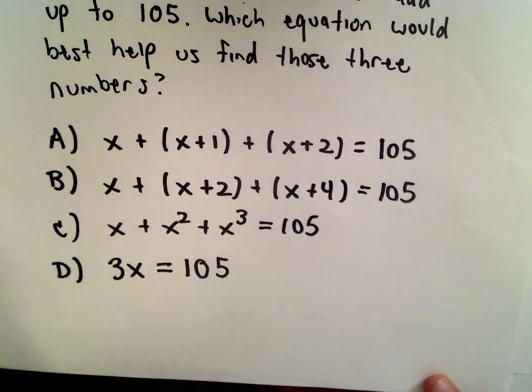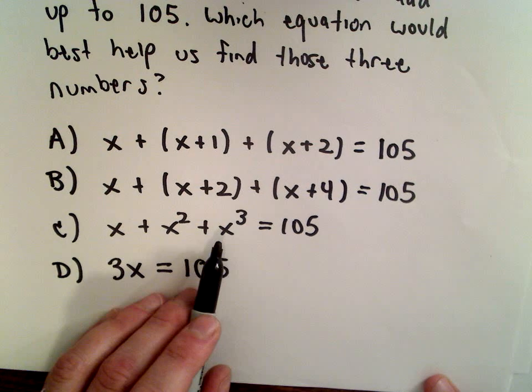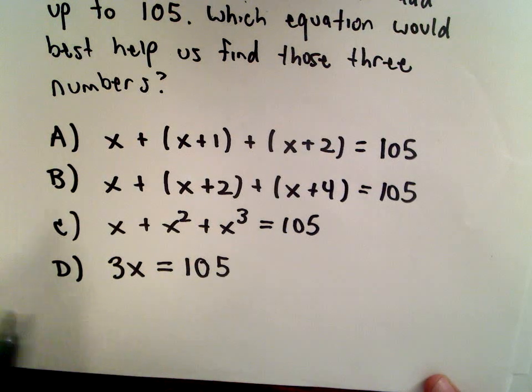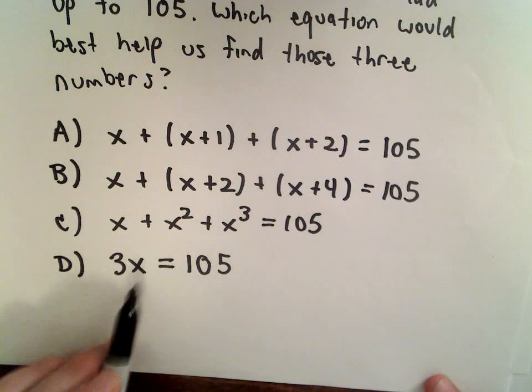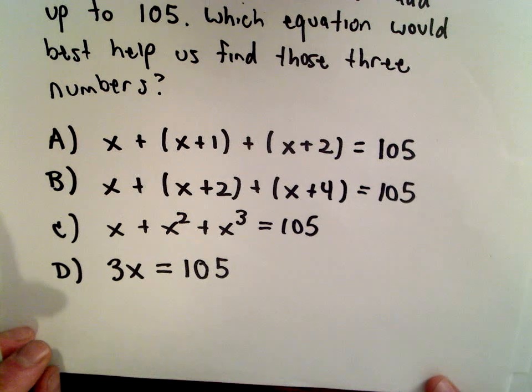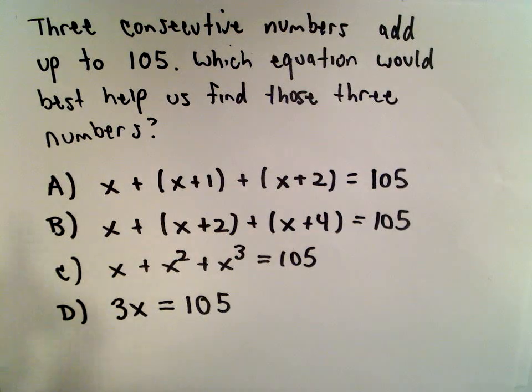Part C is, well, I don't know what this is. It's not doing anything by squaring the number and cubing the number. That's not at all what we're doing. And part D says you're just taking three times some particular number to get 105. And that doesn't address the situation where we're adding up those consecutive numbers.